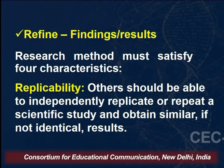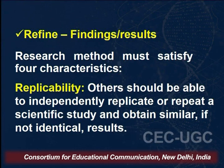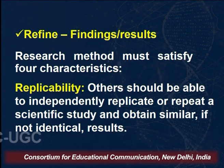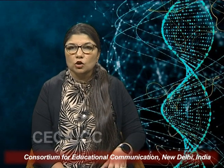The first characteristic is replicability. By replicability we mean that others should be able to independently replicate or repeat a scientific study and obtain similar, if not identical, results. Why similar? Because that is where the scope of refinement comes. If you say all the results generated should be identical, there is no scope for refinement or growth. They may be similar and also create avenues for newer things to be incorporated to make it better and refine it further. The research method must be replicable.